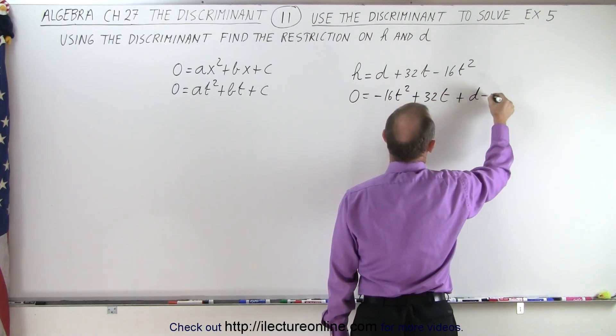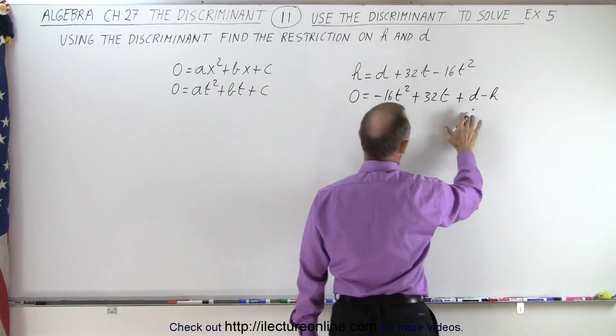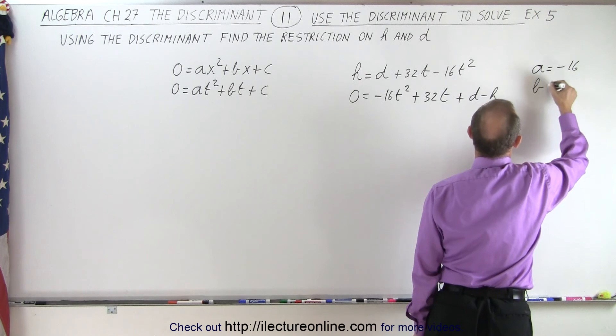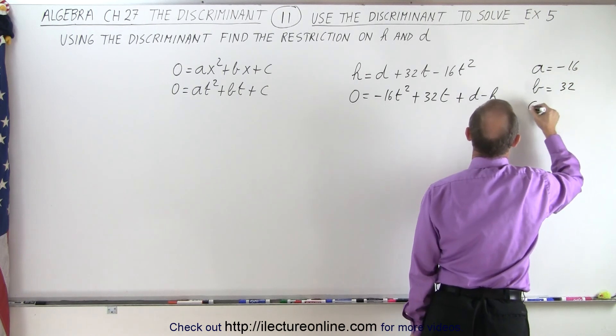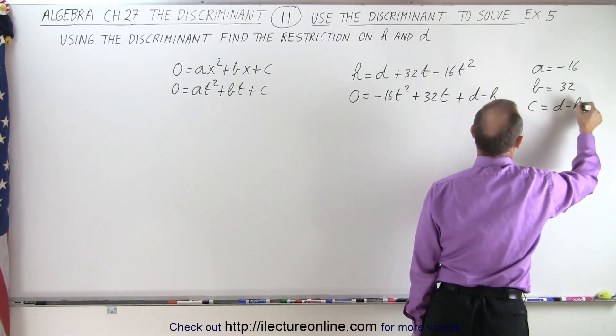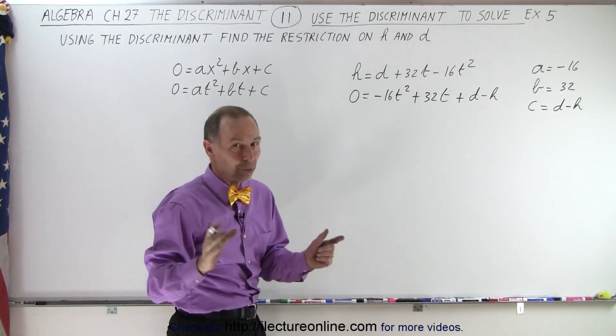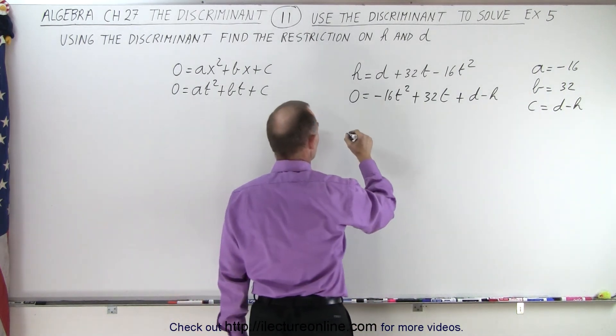And then plus d minus h. So here we recognize that a is equal to minus 16, b is equal to 32, and c is equal to d minus h. And now we're going to calculate the discriminant.